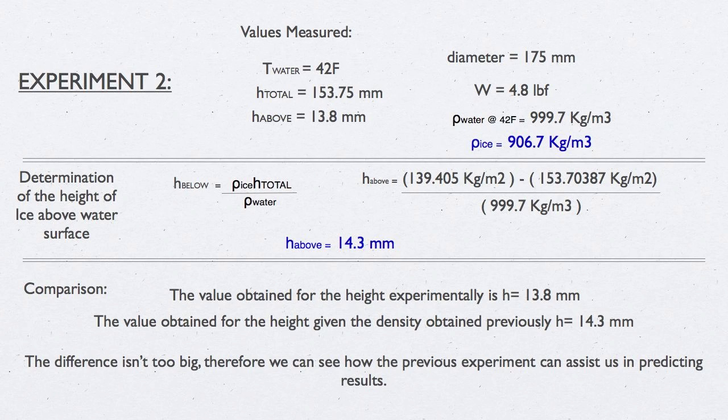As you can see, the value we came up with, 14.3 millimeters, is very close to the value for the height that we measured on the ice block itself, 13.8 millimeters. The difference is not very large.